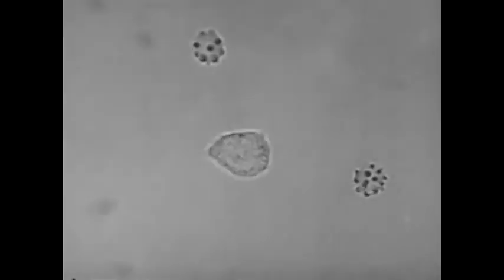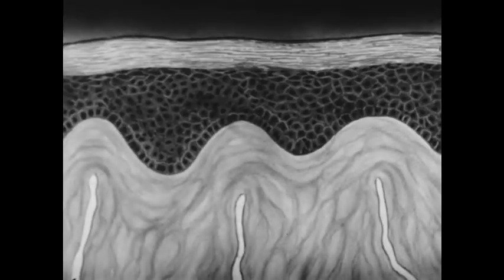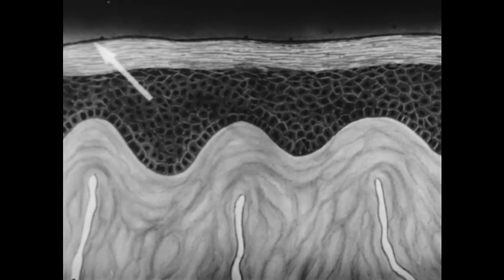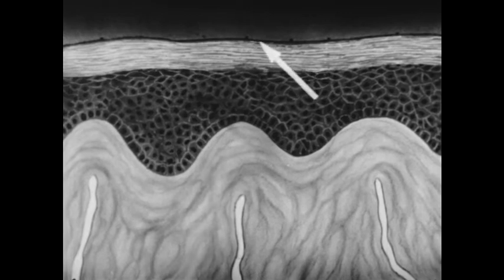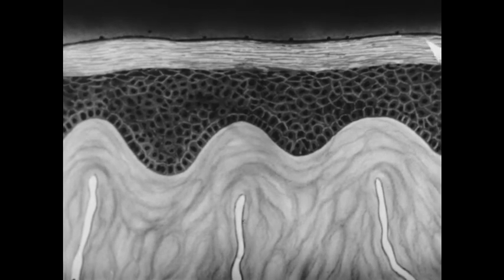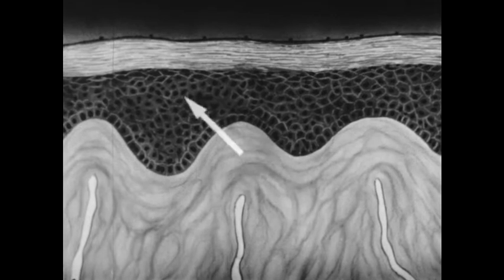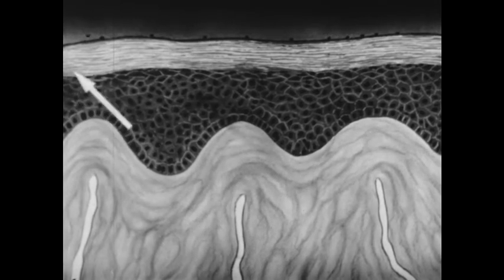The skin, an armor-like coating, is an important part of the first line of defense. Here the structure of the skin is indicated. At the surface is a hard layer of compact cells constantly replaced by cells growing outward from this region. As long as this protective coat remains uninjured, bacteria cannot easily break through.